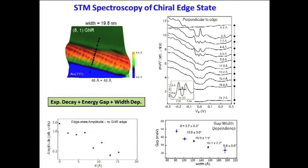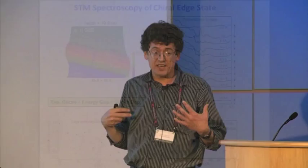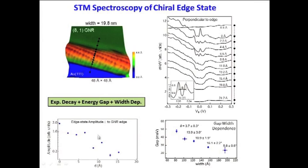Now that we know the chirality, we can measure the local electronic structure using STM spectroscopy. We perform spectroscopy at the edge and at points moving inward toward the center of the nanoribbon. On the gold, the spectrum is featureless. As we go in to the edge, we see peaks sprouting up in this low-energy elastic regime. Those peaks fall exponentially in amplitude as we move away from the edge — that indicates they are due to an edge state. The amplitude falling exponentially away from the edge is a defining characteristic of an edge state.